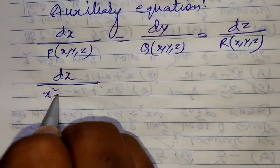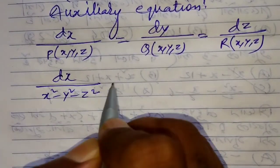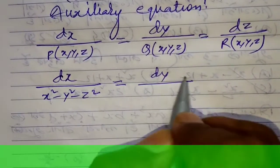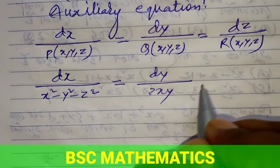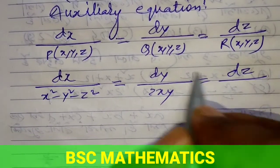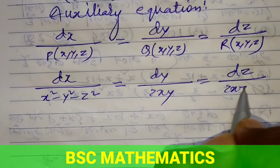dx/(x² - y² - z²), dy/Q which is 2xy, dz/R which is 2xz.